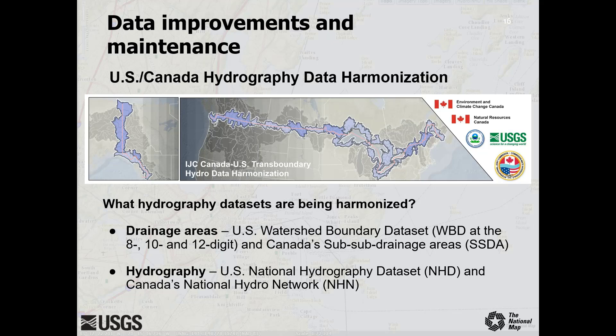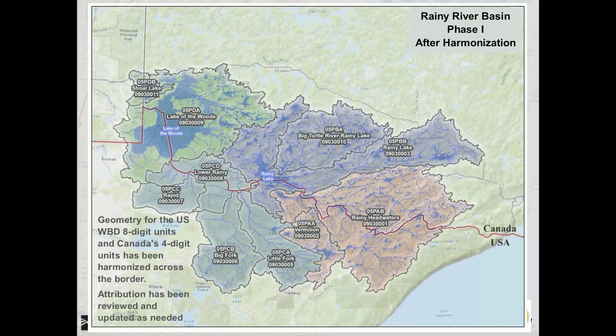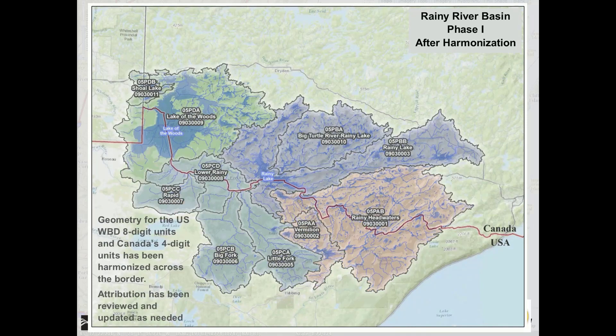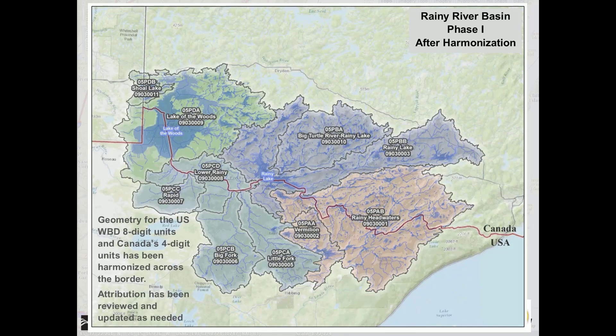Surface hydrography represents the drainage network and contains features such as streams, rivers, and lakes. Within the United States and Canada, hydrography is defined by the National Hydrography Dataset (NHD) and the National Hydro Network (NHN), respectively. The IJC task force is using a phased approach to harmonizing these two geospatial datasets. Phase 1 included development of the working area along the international border composed of WBD 8-digit equivalent drainage areas, accomplished by matching and reconciling the WBD 8-digit hydrologic units with Canada's fourth-level sub-subdrainage areas.